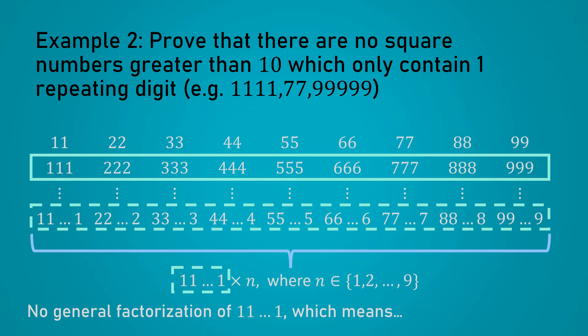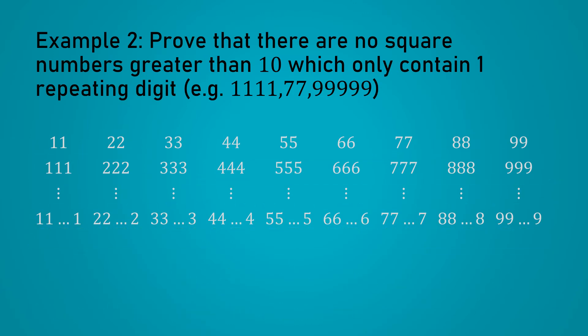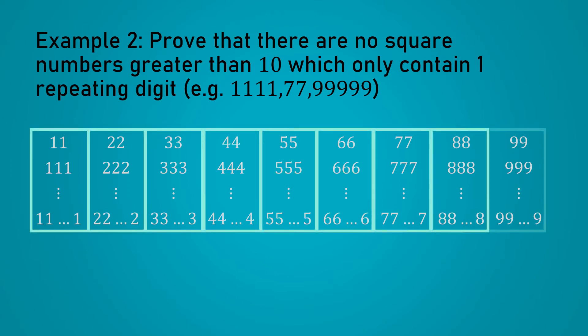And obviously, we cannot just check them one by one because there is no limit to the number of digits in our problem. What does that mean? That probably won't work out. So let's try to split into cases in a different way. Instead of splitting by number of digits, which is horizontal, let's split by what the repeating digit is. In other words, vertically.